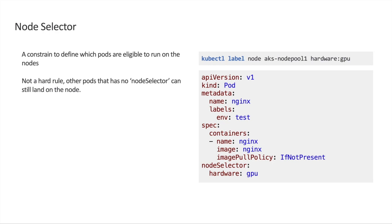Node selectors: if you have an application with specific requirements, for example a GPU workload, and you need it deployed on GPU nodes only, you can use node selectors. You label the node — in our example, hardware GPU — and in your pod manifest, you specify that the pod will only land on a node with that label. When using node selectors, the pod will only deploy when nodes with the label have capacity; otherwise the pod will fail to deploy. Note that node selectors are not hard exclusion rules — other pods with no node selector can still land on the node.